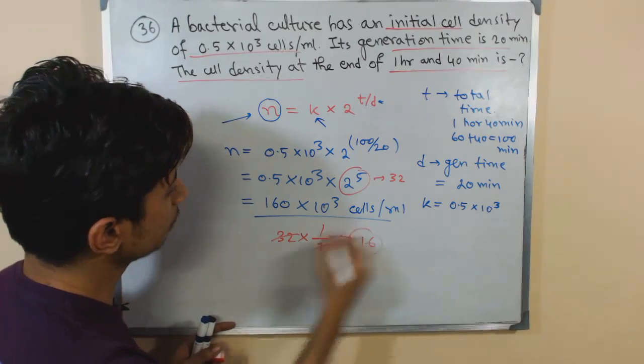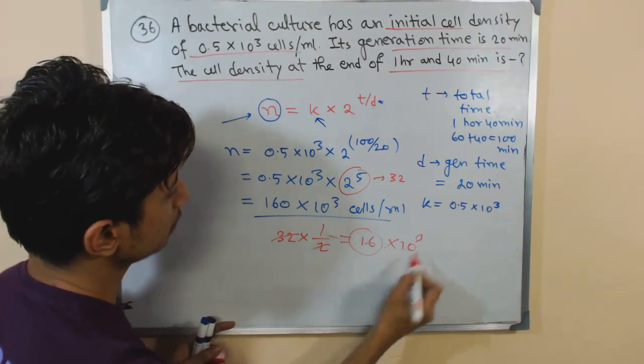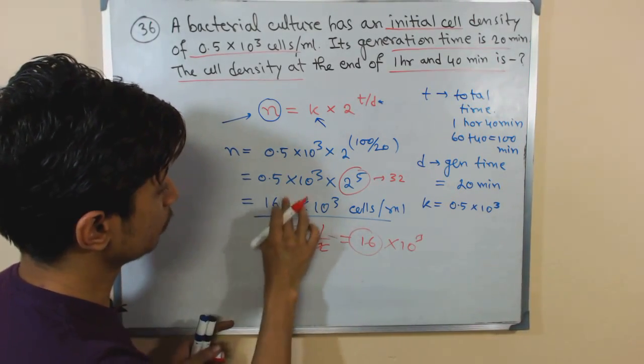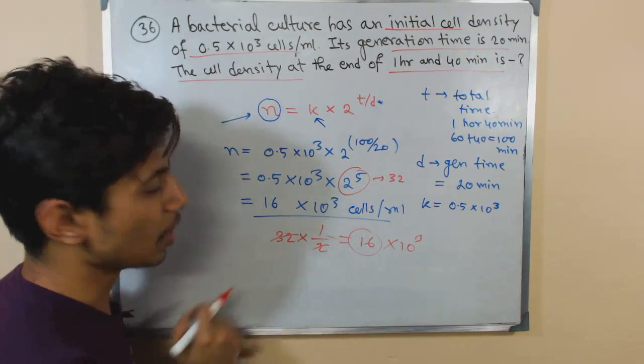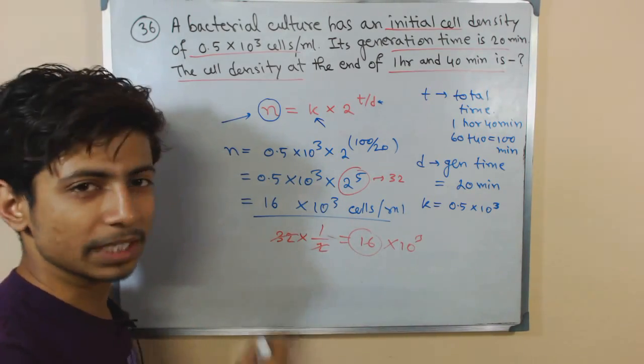So 32 into 0.5 - 0.5 simply means half, so simply it will give you 16 into 10 to the power 3, right? So it won't be 160, it will be 16 into 10 to the power 3 cells per ml. So that is going to be the answer guys.